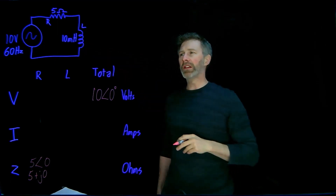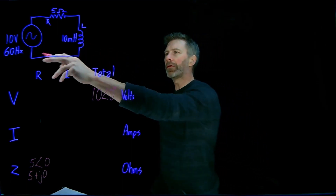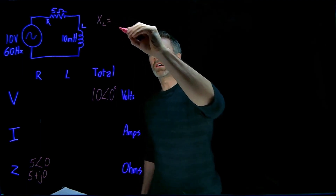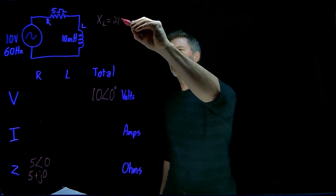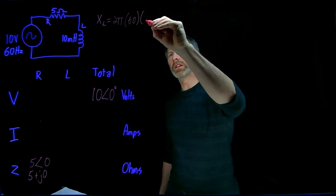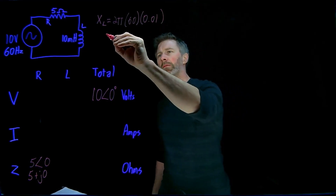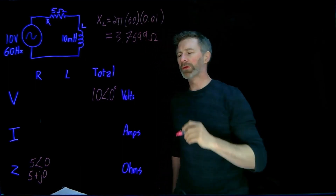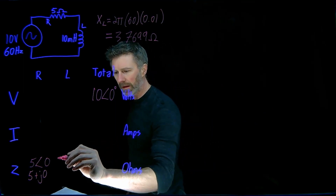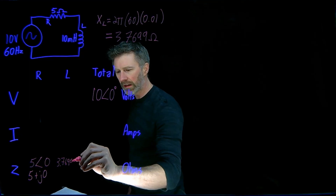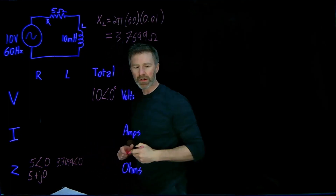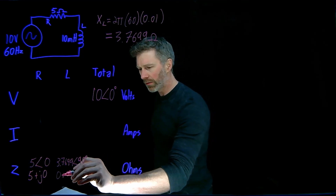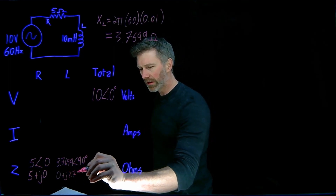We know the inductance, and we can use the inductance and the frequency to figure out what the reactance of that inductor is, as well as the impedance. So that calculation: XL is equal to 2 pi times the frequency, which is 60 Hertz, times the inductance, which is 0.01 Henrys. Multiply all that out and we get 3.7699 ohms. So the impedance of the inductance is 3.7699 with a phase angle of 90 degrees, because it's an inductor. So in rectangular coordinates, that'll be 0 plus J3.7699.